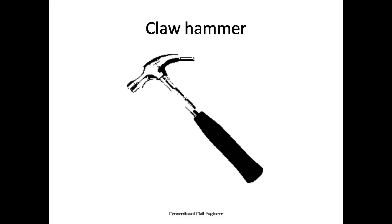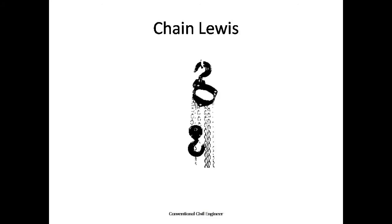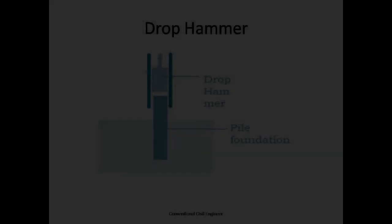Chain Lewis is used to lift the stone masonry and drop hammer is used for pile foundation where the drop hammer is dropped from a height to drive the pile foundation.